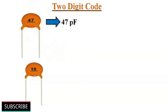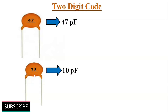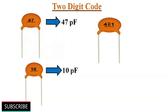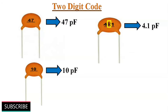If 10 is printed on a ceramic capacitor, then its value is 10 picofarads. In cases where small values with a decimal point need to be represented, the alphabetic letter R is used. For example, a 4.1 picofarad capacitance is labeled as 4R1 on the ceramic capacitor surface.